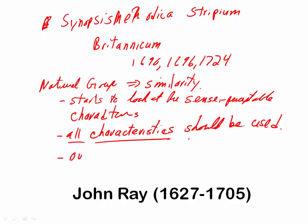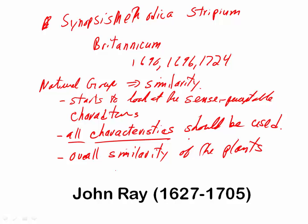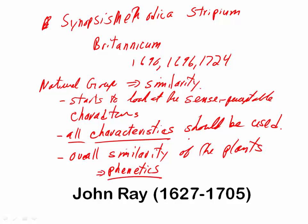This idea that all characteristics are informative for classification is very influential — we could call it overall similarity. We'll see that term again when we talk about the school of phenetics. Pheno means 'to show,' and the school of phenetics is going to be based on ideas of Ray and another taxonomist, Adanson. The phenetics idea — that you should look at all characteristics of plants — comes from Ray.